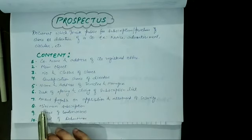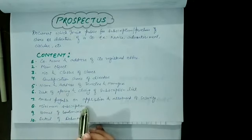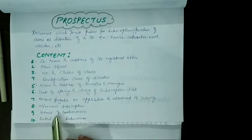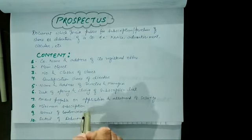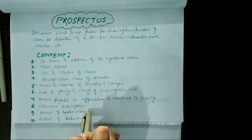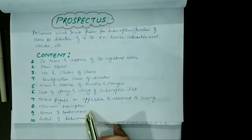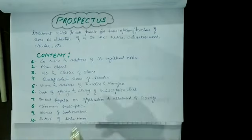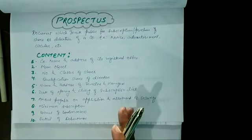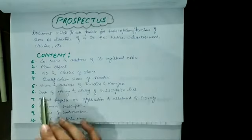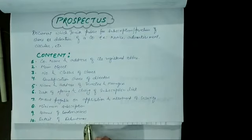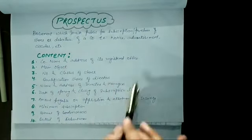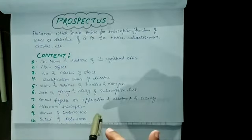It also contains the Amount of Minimum Subscription. It also contains the Name of Underwriters. Underwriters कौन होते हैं? एक तरीके के brokers होते हैं, जो company के सारे shares खुद खरीद लेते हैं, तो company की headache खत्म हो जाती है। फिर यही company के shares को market में sold करवाते हैं। The next one is detail of debentures. Debentures की details भी हमें prospectus में मिलती हैं। This is all about the document Prospectus.